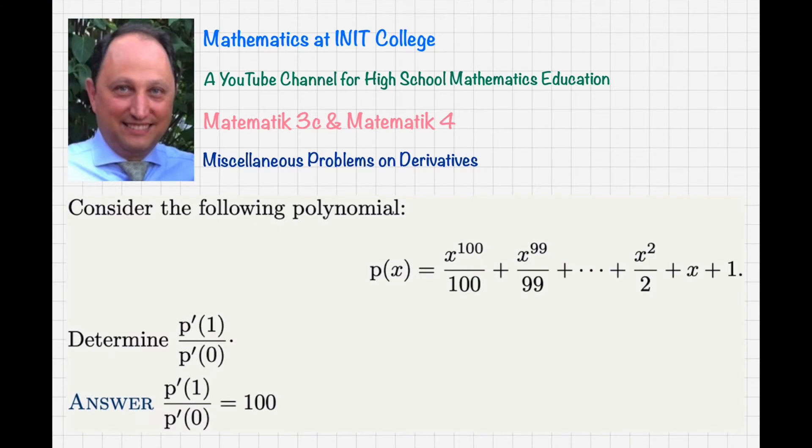I recommend you to pause the video now and try to give the problem a try yourself. If you do everything correctly, what you will get at the end is p prime of 1 over p prime of 0 equals 100.